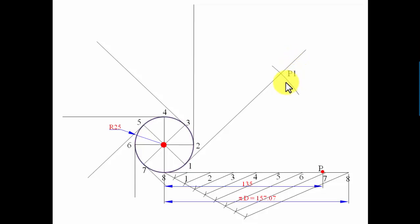This is going to be point P1. Similarly, from two to P, take an arc with two as center to cut an arc, that is P2. Three to P, three as the center, P3. Four to P, four as the center.